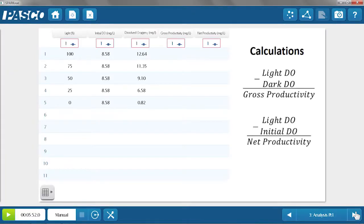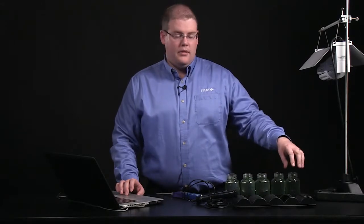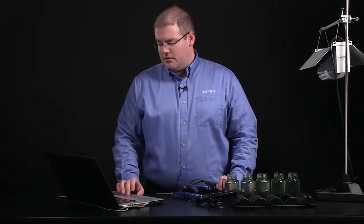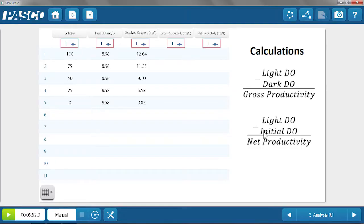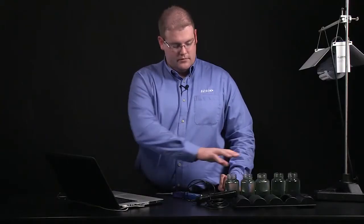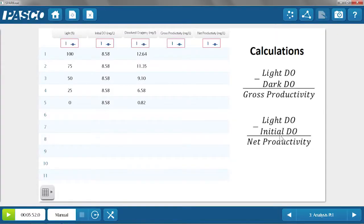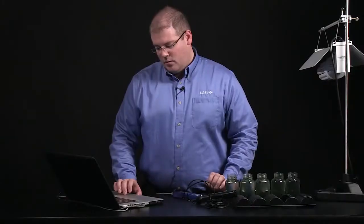So in the first part of the analysis here, we'll be calculating the gross productivity, which is the light bottle minus the dark final dissolved oxygen concentration. And then after that, the net productivity, which is the light bottle again, minus the initial dissolved oxygen, which we measured on day one. We could use a calculation under these values. I'm going to go ahead and do it manually. Or you can have your students record their data in their lab notebook.